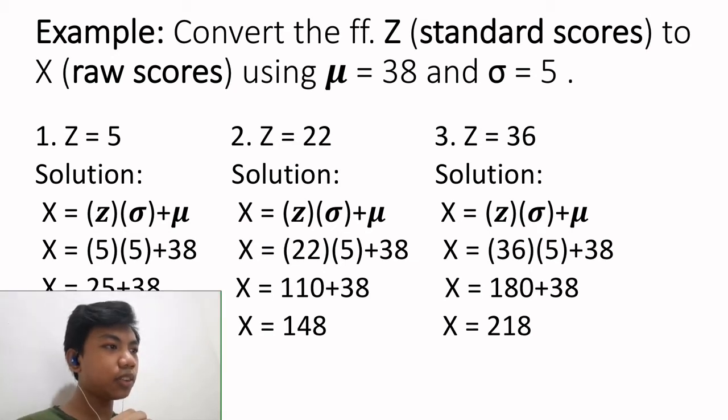Number 2, z equals to 22. Solution, x equals to 22 times 5 plus 38. 22 times 5 equals to 110 plus 38 equals to 148.